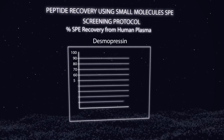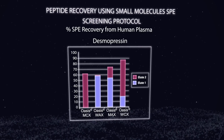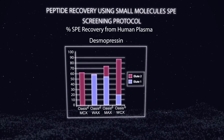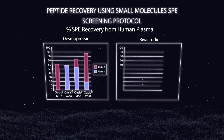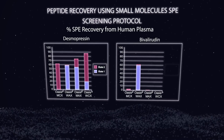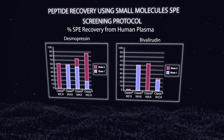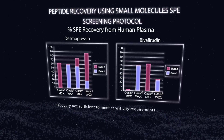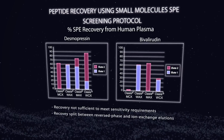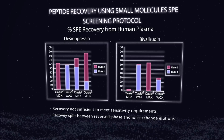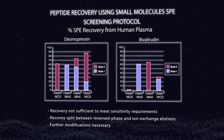It was really interesting to run that 2x4 protocol on large molecules — it's typically successful for small molecules. But for desmopressin and bivalirudin, it still didn't work. Across the four different sorbents, the two peptides were eluting in elute one and elute two — not even in the same solution. Recoveries are all over the place, so we still don't have a solution and will need to modify these methods.